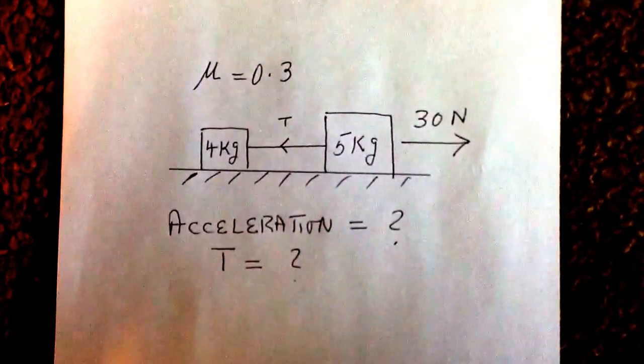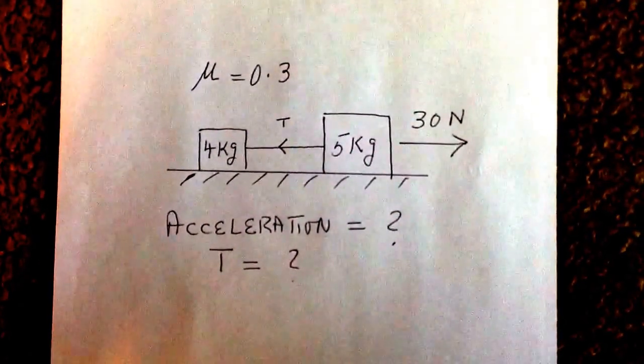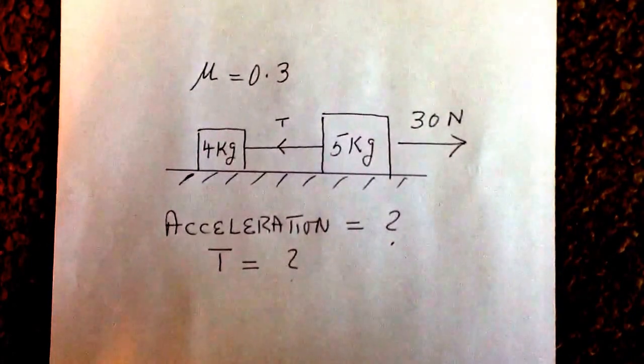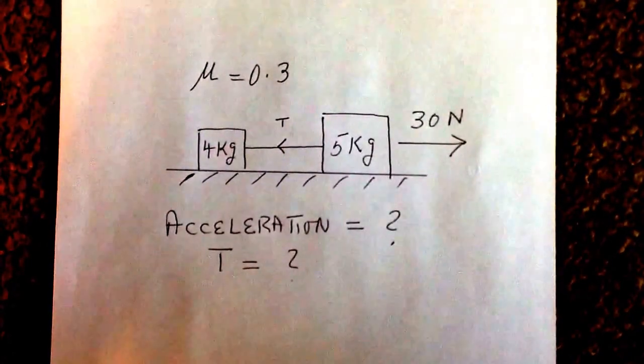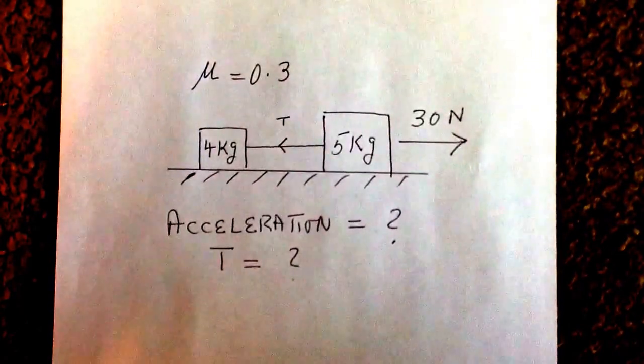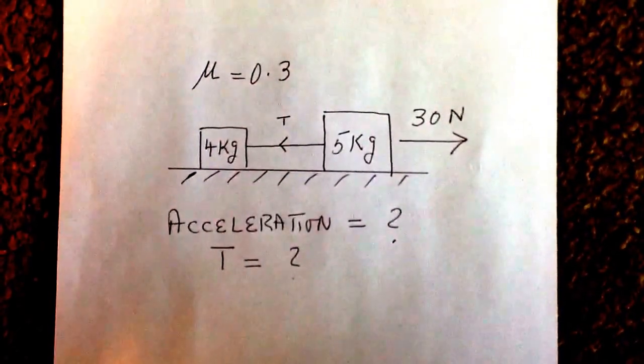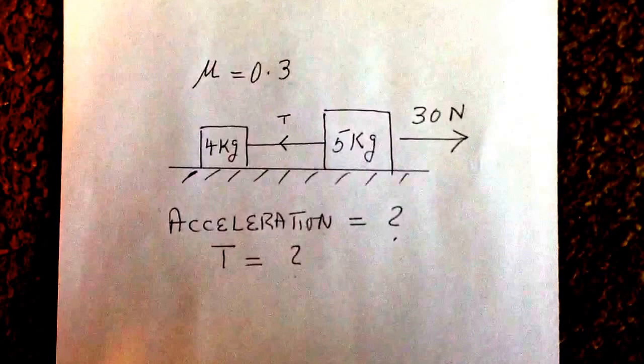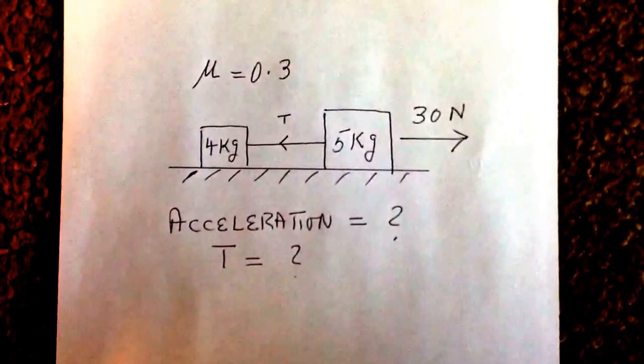A 4-kilogram and 5-kilogram blocks connected by a rope are being pulled on a surface. The force that is applied is 30 newtons.